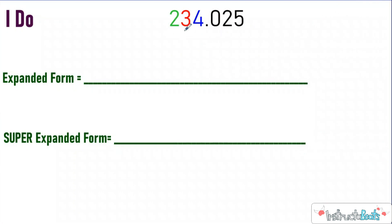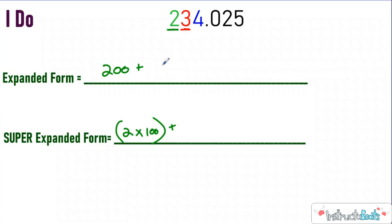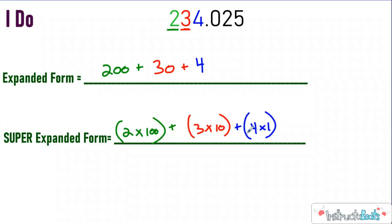Here's our I do. We have 234 and 25 hundredths. My two is in the second position to the left of my ones place, which is the hundreds place. Two groups of 100 would be 200. In super expanded form, we write the digit and multiply it by the factor 100 because it's in the hundreds place. Then the three is in the tens place — three groups of 10 would be 30 — and we're multiplying three by 10 because it's in the tens place. Then we have our four because it's in the ones place, giving us four groups of one in super expanded form.